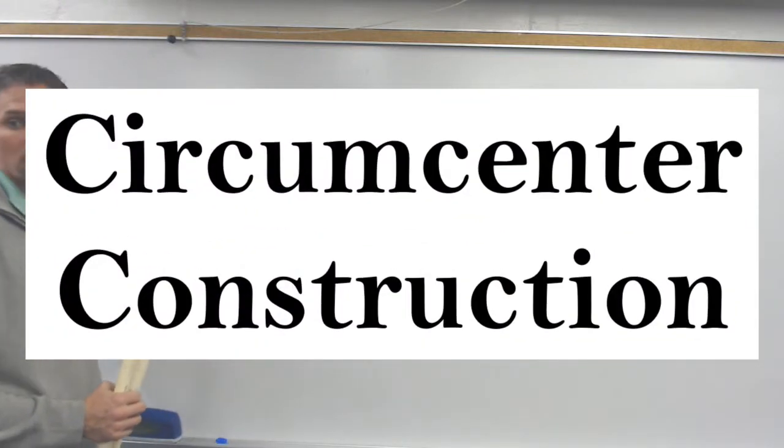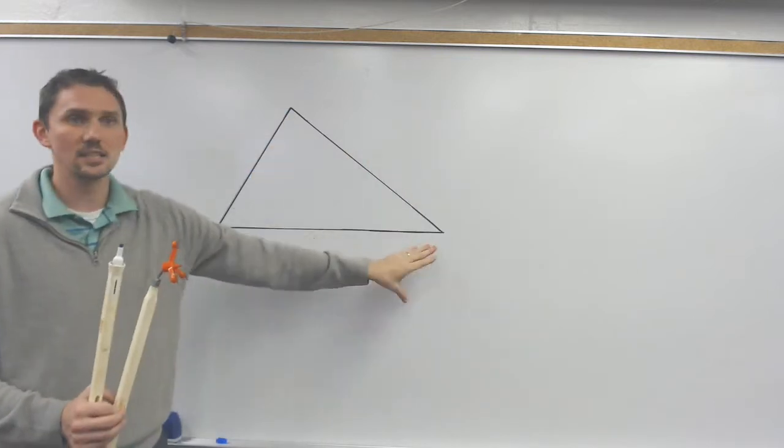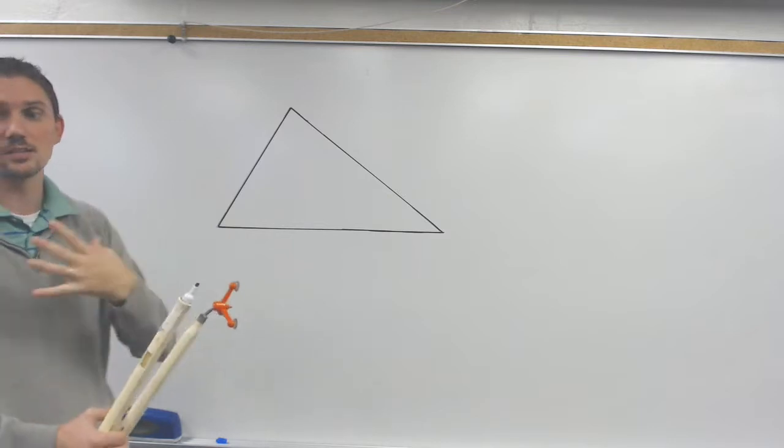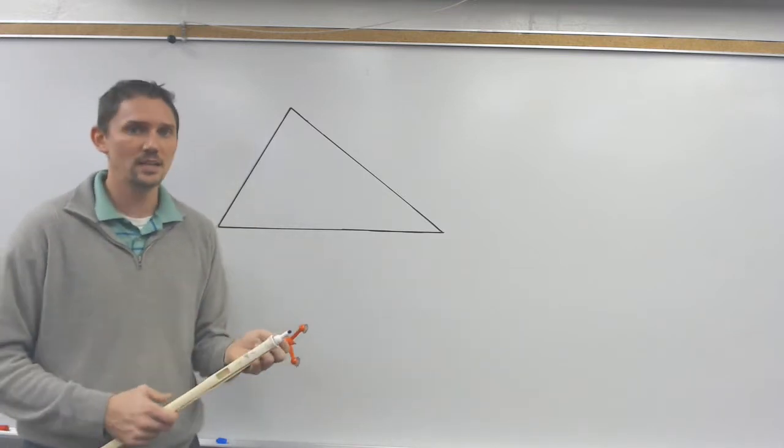So if I want to construct the circumcenter of this triangle, I'm going to need to take the perpendicular bisectors of two of the sides. And it's better to take the perpendicular bisectors, in my opinion, of the two longer sides of the triangle, because that just makes it a little bit easier.